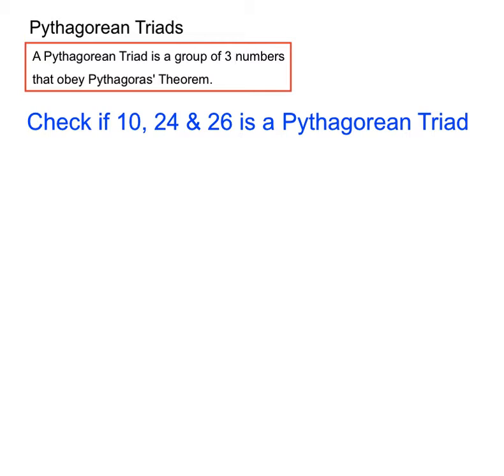Now, the questions. This is one example. We're asked to check if 10, 24, and 26 is a Pythagorean triad. Now, let's see.